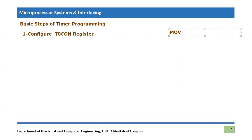The Timer Zero Control Register is a composition of eight bits. We define those eight bits and move them into the working register. In binary: the very first bit is the Timer Zero on/off bit, which should be zero because we are not starting our timer yet. The second bit is the selection of 8-bit or 16-bit mode — we are going to use 16-bit, so we put zero. The third bit determines whether we use internal or external clock; we are using the internal clock shared with the crystal oscillator provided to the PIC18F microcontroller, so it will be zero.